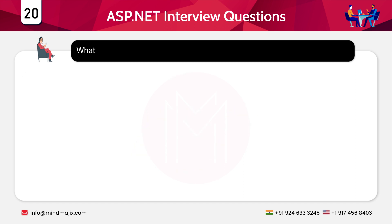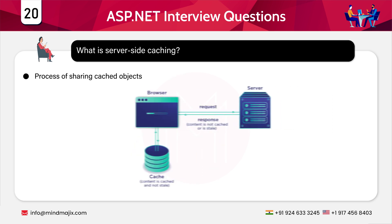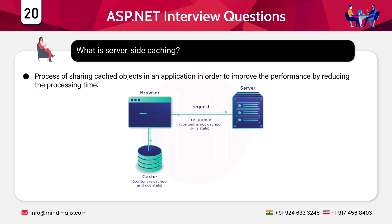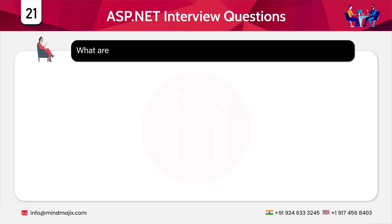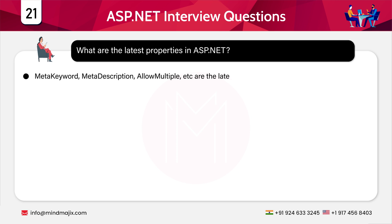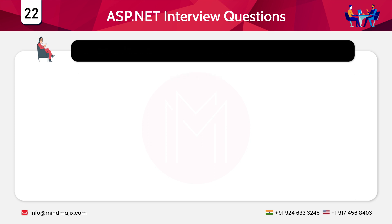The next question is: what is server-side caching? Server-side caching is the process of sharing cached objects in an application to improve performance by reducing processing time. Cached objects are active up to a specific time. The next question is: what are the latest properties in ASP.NET? The latest properties include meta keyword, meta description, allow multiple, and so on.